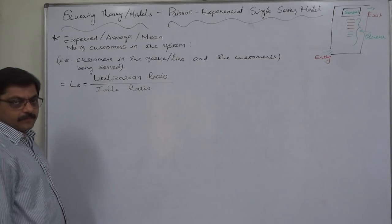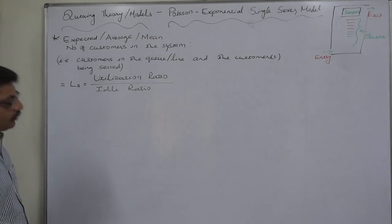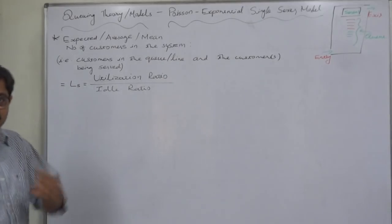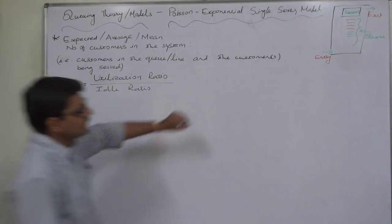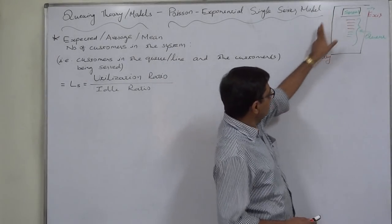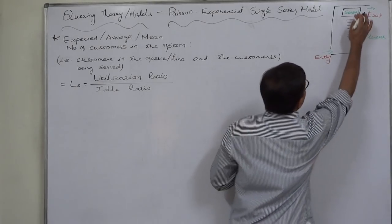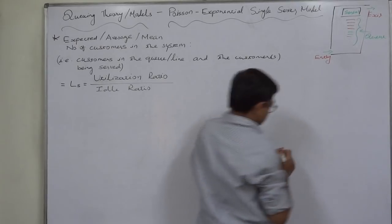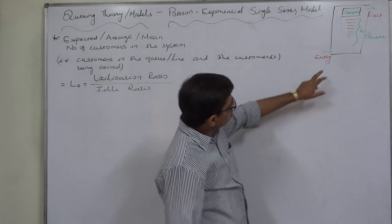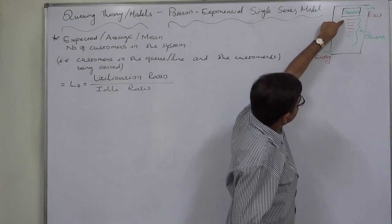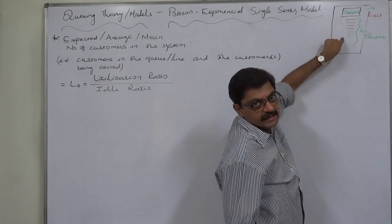In the system, how to calculate mean number of customers in the system. First of all, what do we mean by mean or average number of customers in the system? See, this is a sketch of the system with single server, and number of customers in the system means the customer or customers being served as well as in the queue.